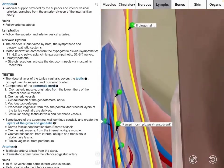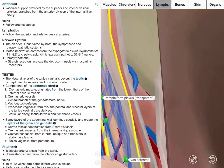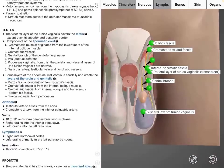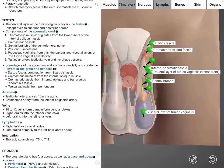The visceral layer of the tunica vaginalis surrounds most of the testes. In terms of the blood supply to the testes, the testicular artery is a branch of the aorta, and the cremasteric artery is a branch of the inferior epigastric artery.